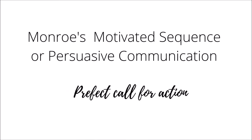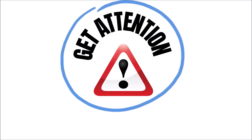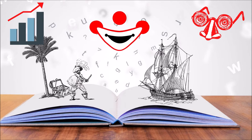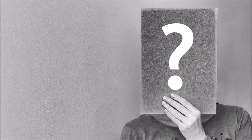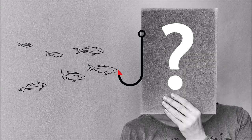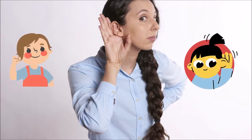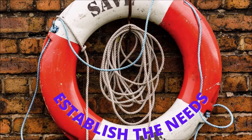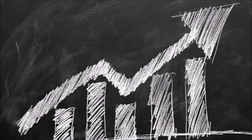We'll use a five-step process known as the Monroe Motivated Sequence, or persuasive communication. Let's get started. Step 1: Get Attention. Get the attention of your audience — use storytelling, humor, a shocking statistic, or a rhetorical question — anything that will get the audience to sit up and take notice. Step 2: Establish the Need. Convince your audience there is a problem.